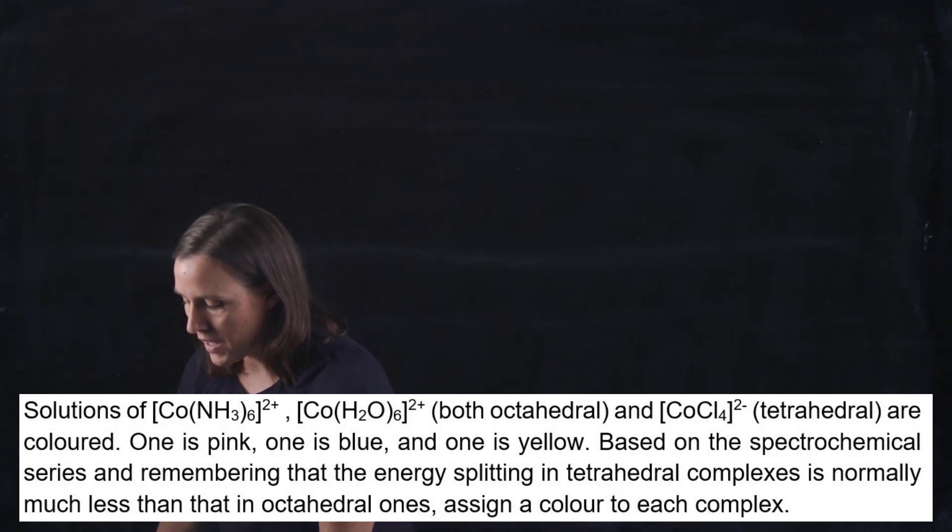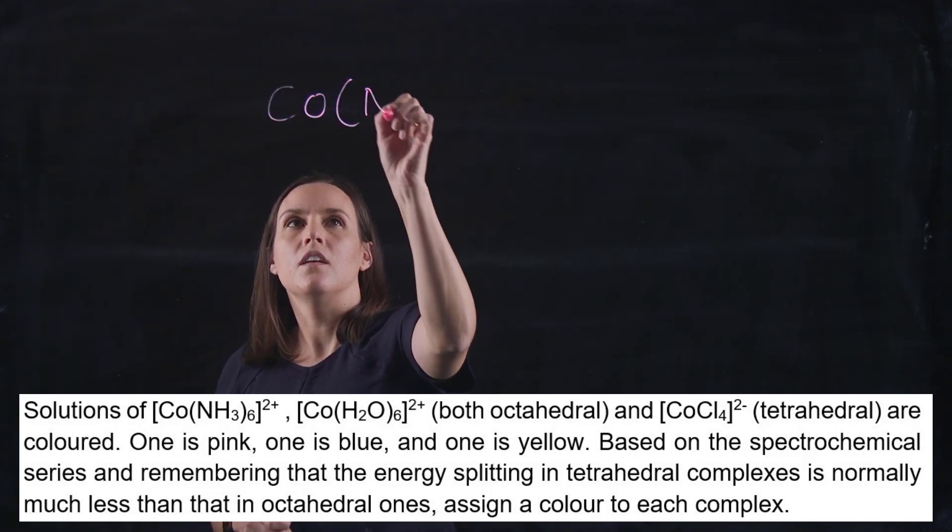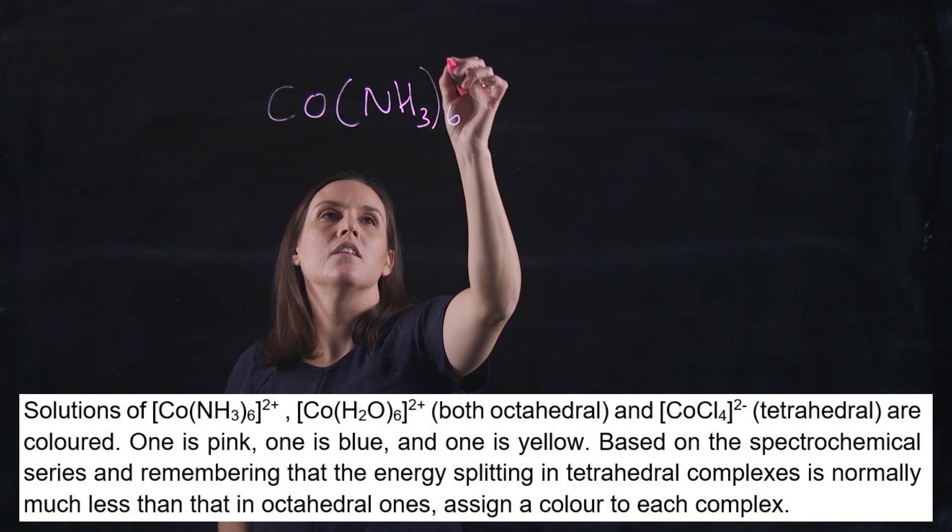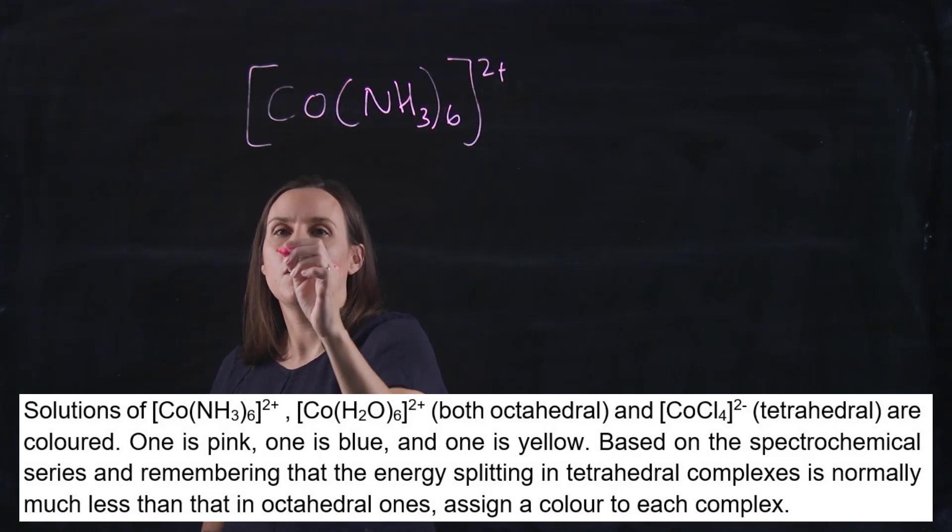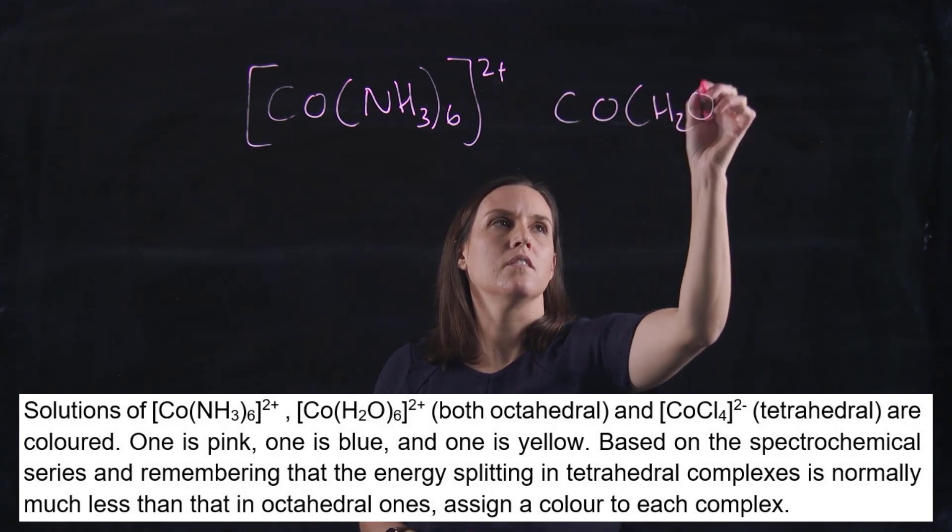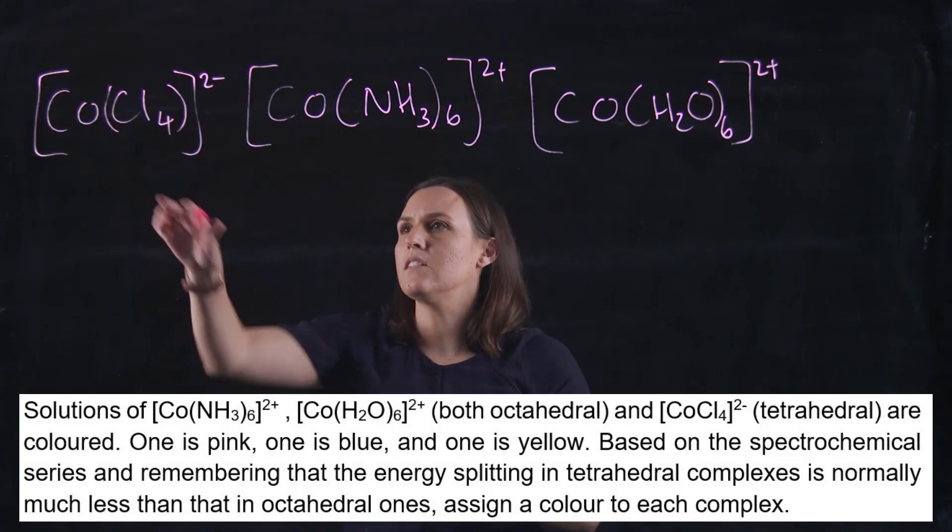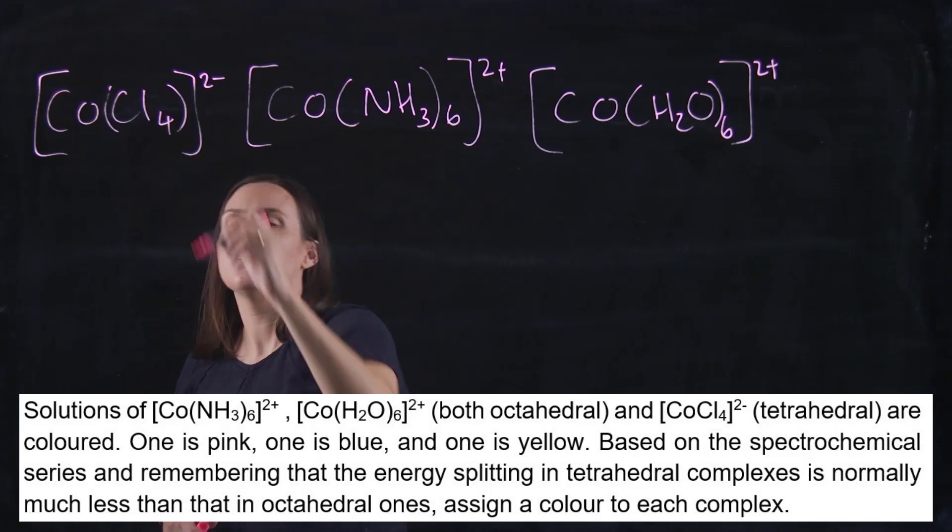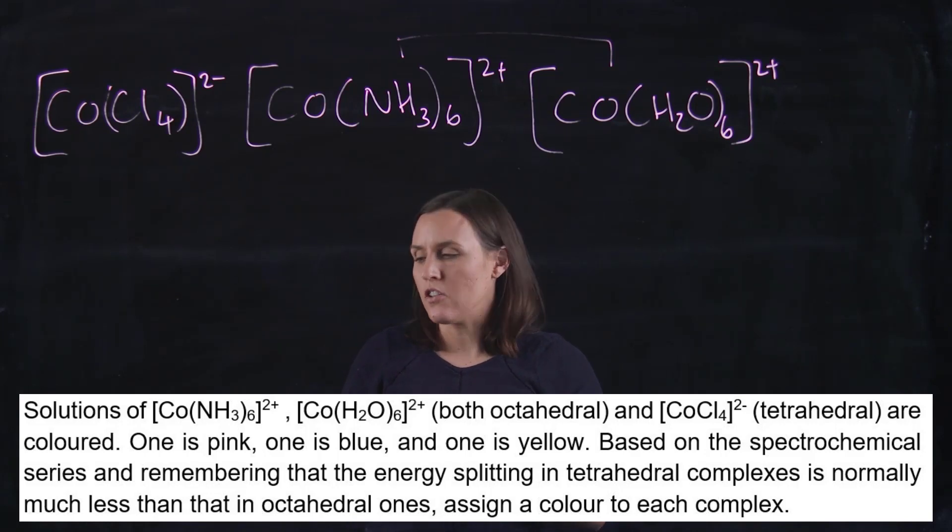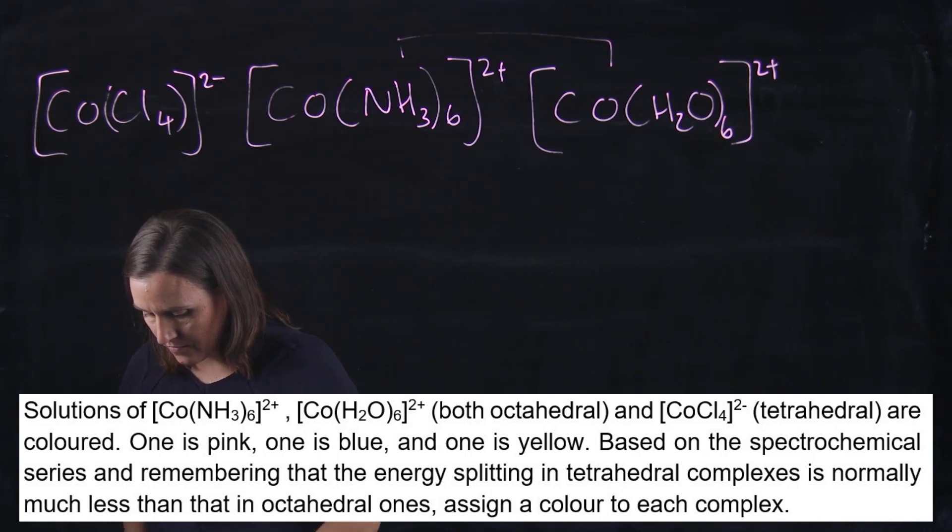Let's write out the complexes. We've got [Co(NH₃)₆]²⁺, [Co(H₂O)₆]²⁺, and [CoCl₄]²⁻. These two here are octahedral and this one is tetrahedral.